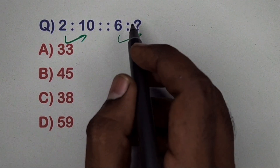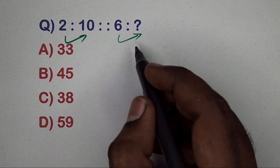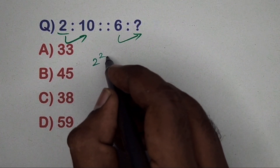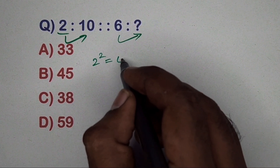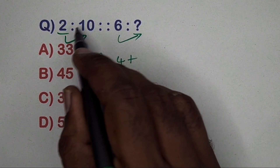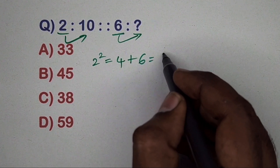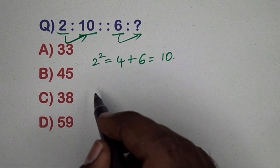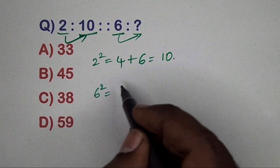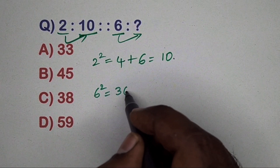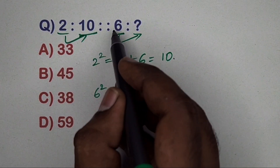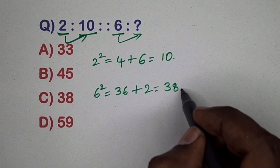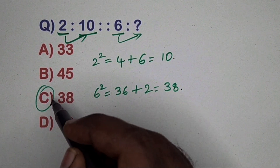Take 2 — 2 squared equals 4, add 4 to the opposite number 6, so you get 10. This is the relationship. Same way, take 6 — 6 squared equals 36, add the opposite number 2, so you will get 38. That is the correct answer.